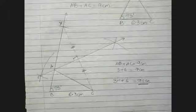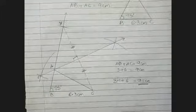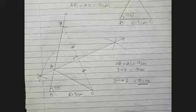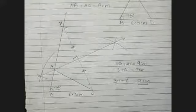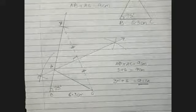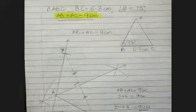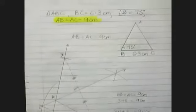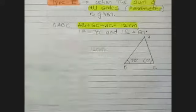Don't change the measured values — keep them as they are, because this is construction and exact values may vary slightly. This is Type 1, where we used the sum of two sides.